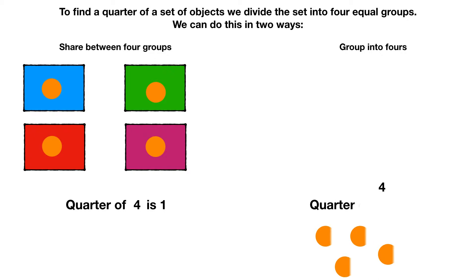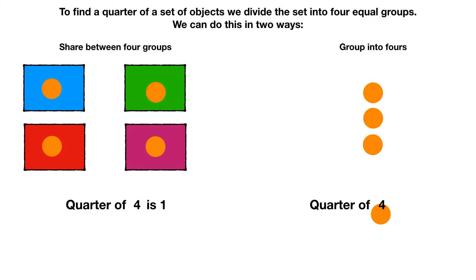Now let's find a quarter of four by grouping. Again we have four circles and we want to find a quarter. We move the circles into groups of four like this. Now we count how many groups of four we have. We have one, so a quarter of four is one.